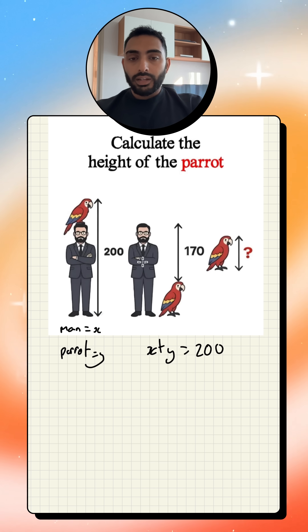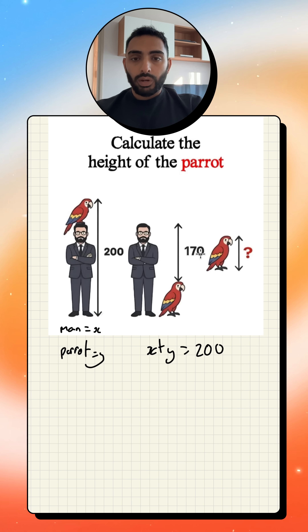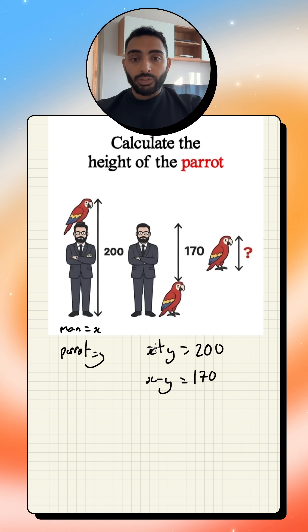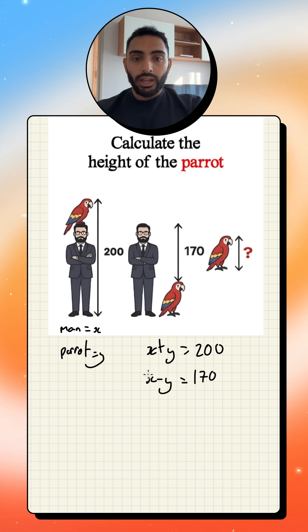And then I can see the same thing happening here, but this time X minus Y will give me 170. So I can add these two equations together.